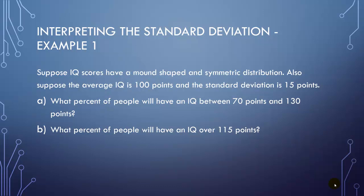So first question, what percent of people will have an IQ between 70 points and 130 points? And then the next question is, what percent of people will have an IQ over 115?